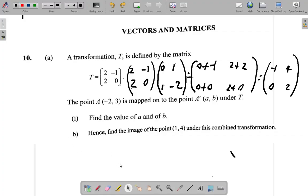Part B of this section asks to find the image of the point (1, 4) under this combined transformation.